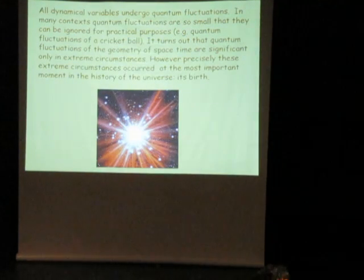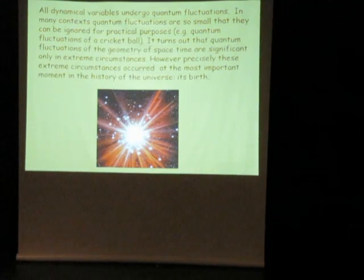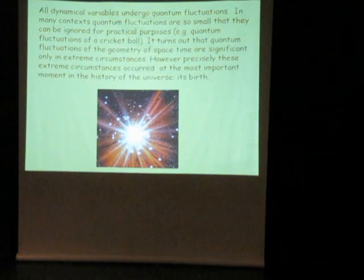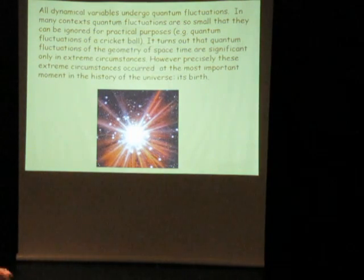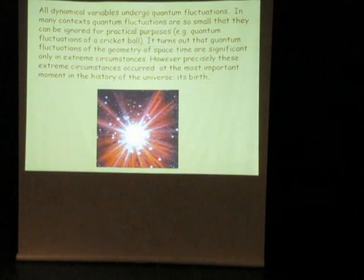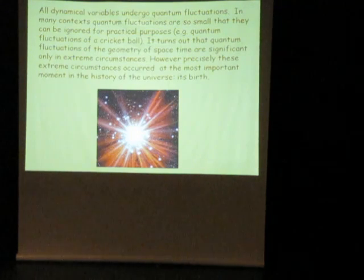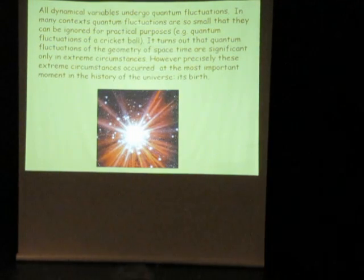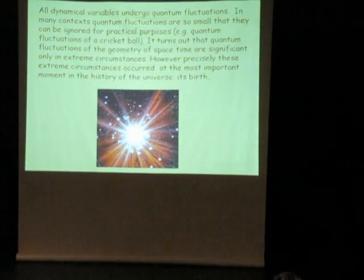Requiring that the world is described by a mathematically consistent theory tells you that even if there are variables in the universe we have never yet encountered, they must fluctuate in this quantum way. We have already encountered one set of dynamical variables — namely the geometry of space-time — which dynamically reacts to what's going on. So if the world is consistently described by quantum mechanics, the geometry of space-time must also fluctuate in this fuzzy quantum way.